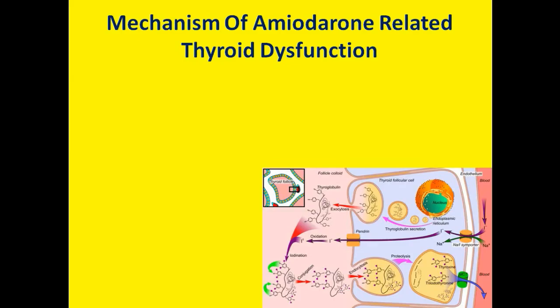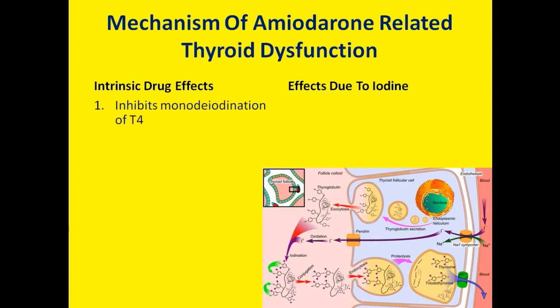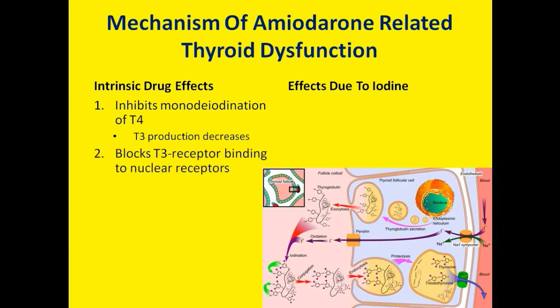The mechanism of amiodarone-related thyroid dysfunction can be classified into two types: effects due to intrinsic drug properties, or effects due to iodine. As an intrinsic drug effect, amiodarone inhibits the mono-deiodination of T4, leading to decreased production of T3. Amiodarone also blocks T3 receptor binding to nuclear receptors, decreasing expression of thyroid hormone-related genes.